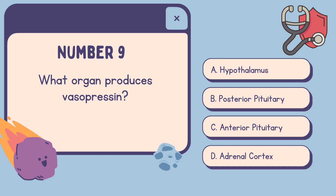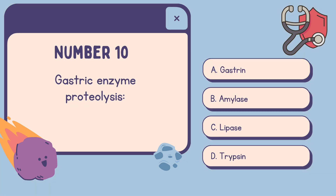Number 9: What organ produces vasopressin? A. Hypothalamus, B. Posterior pituitary, C. Anterior pituitary, D. Adrenal cortex. The correct answer is A, Hypothalamus.